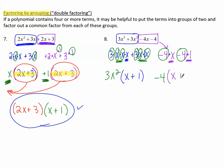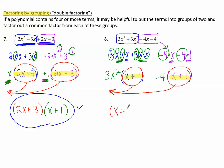What's left over from the second group is x and positive 1. Notice again that we have the same binomial, x plus 1, in both groups. Now we can factor out that common binomial. x plus 1 is in common, so it comes out. What's left over is 3x squared minus 4. And there is our factored polynomial.